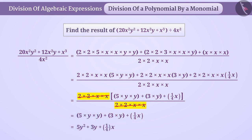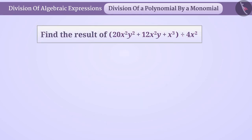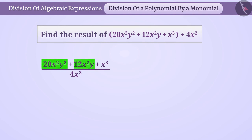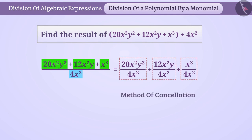Let's solve this with another interesting method. We can divide each term of the polynomial by the denominator separately. To find the result of the division, we get the quotient of each term separately using the cancellation method.